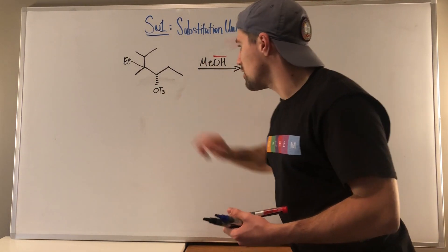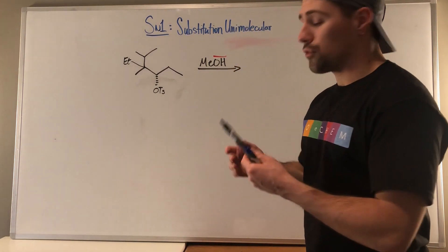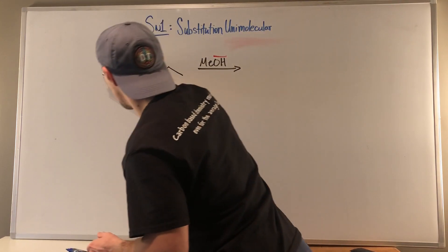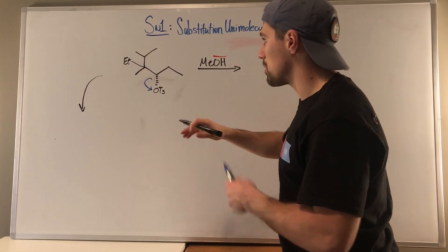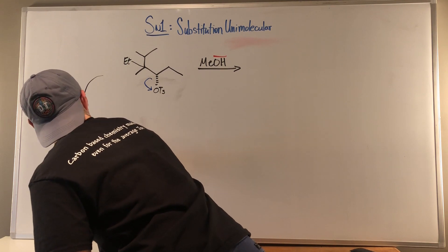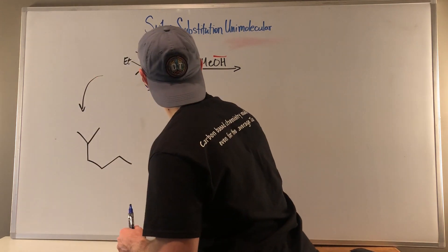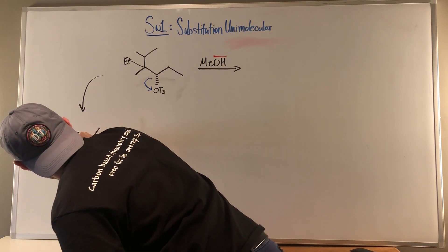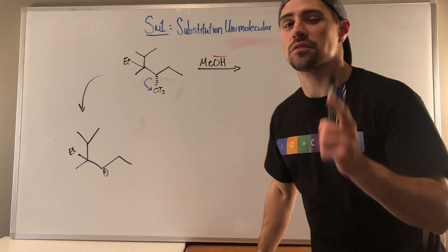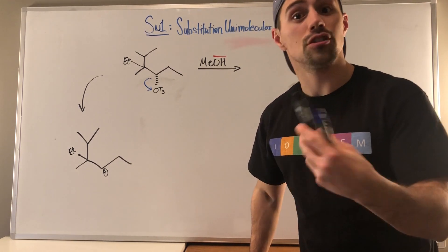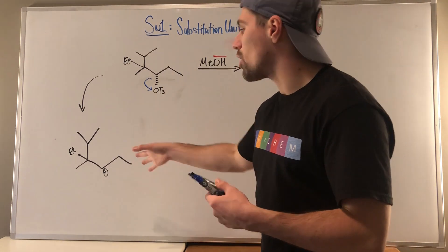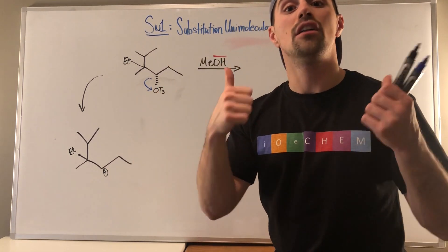Secondary carbocation — definitely good to go. Polar protic solvent, good leaving group. Let's do SN1. First thing: solvolysis, leaving group leaves. I'll draw my initial carbocation — ethyl, methyl, and carbocation right here. But remember, this is where we freeze and think: can we make this carbocation better via a shift? If we look to our right, we're secondary here and secondary there — no room for improvement. We want to move our carbocation to a new location that is more substituted; the more neighbors we have, the better.